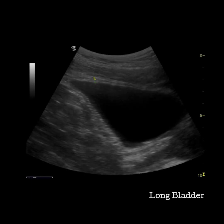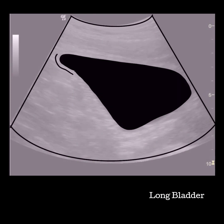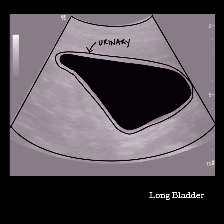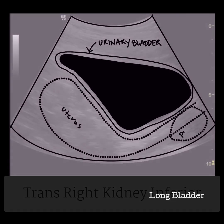The long bladder image can also be used for measuring the bladder wall. The distended bladder should be seen anterior to the uterus and prostate and superior to the pubic symphysis. Sweep beyond the bladder in both planes to evaluate for dilated ureters.